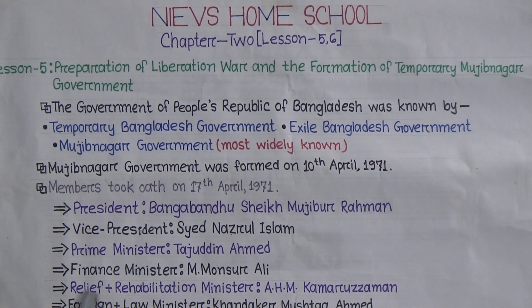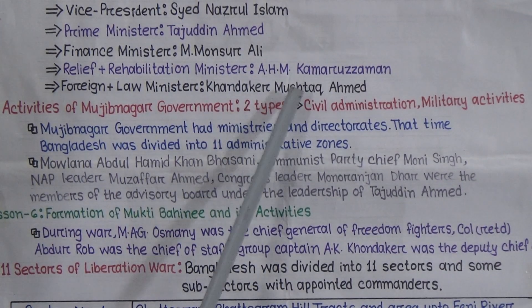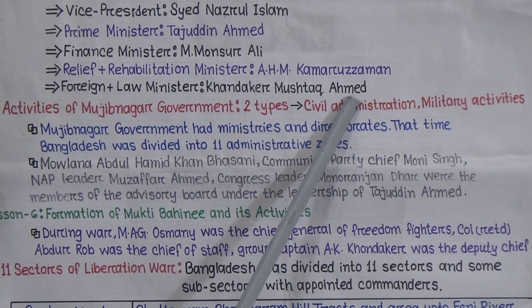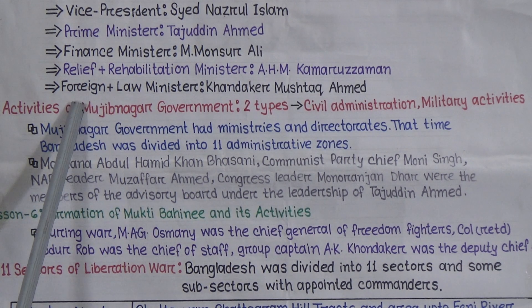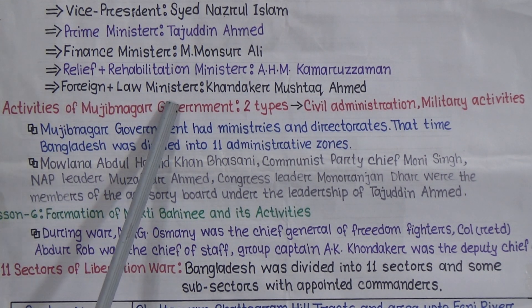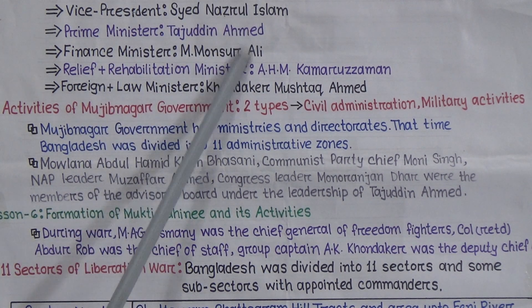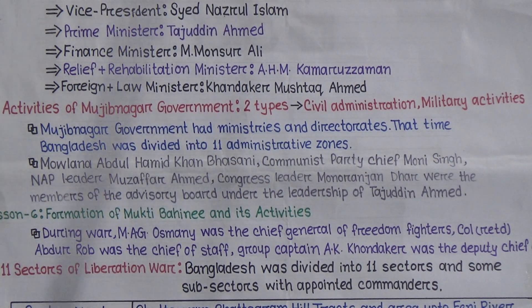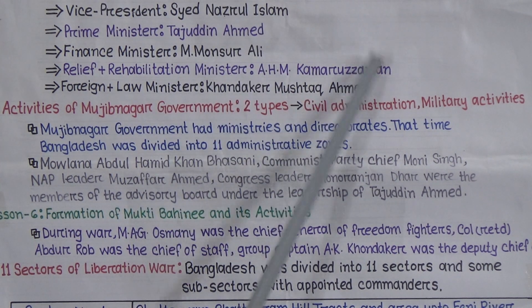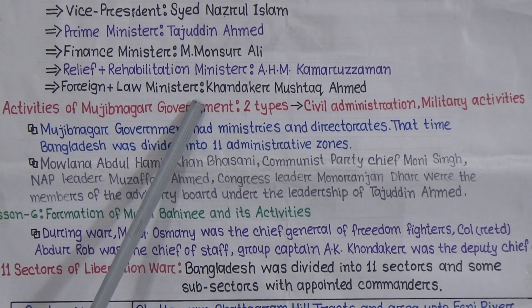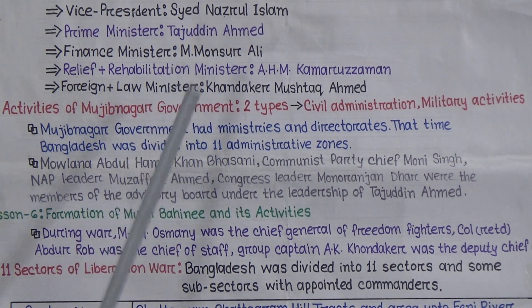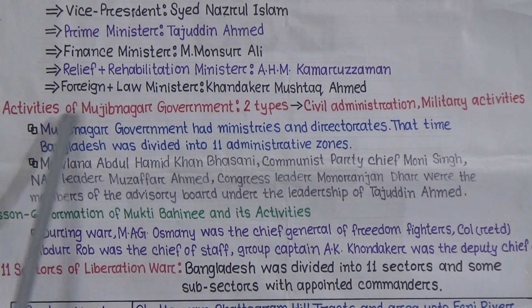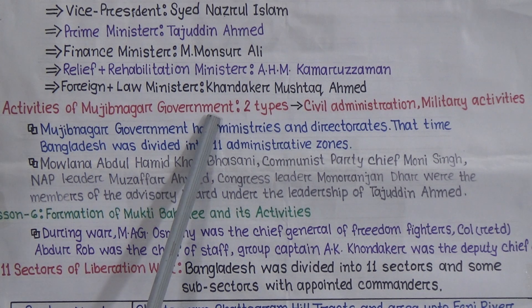AHM Kamarul Islam was the relief and rehabilitation minister, and Khondokar Mushtaq Ahmed was the foreign and law minister of Mojibnagar Government. You have to learn these members for your MCQ and creative questions. These are very important pieces of information related to Mojibnagar Government.